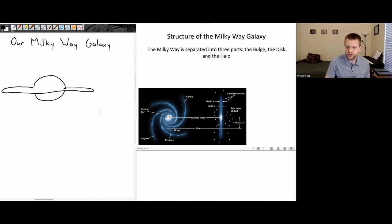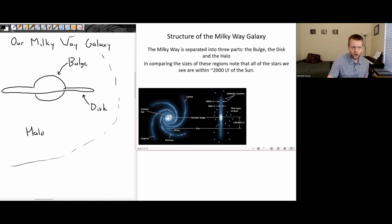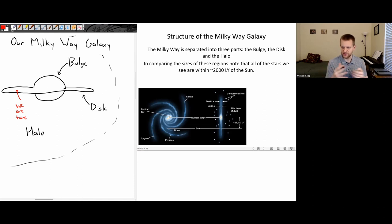There are three basic parts to the Milky Way galaxy: we have this bulge in the middle, we have the disk, and we have the halo, which extends all the way around. For our own solar system, we would be about two-thirds of the way out in that disk. All of the stars that we can see in the night sky are within about 2,000 light years of the sun.